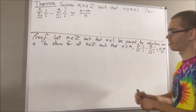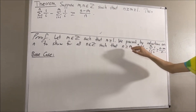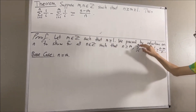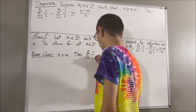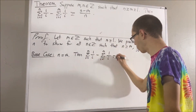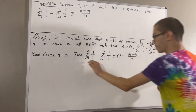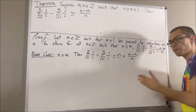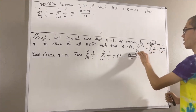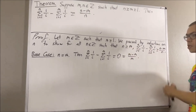Let's start with the base case. In the base case, we're trying to prove that this is true in the case where n is equal to m. Let me start by writing the left-hand side of this inequality where n is replaced with m. Well, since these two sums are equal, we know that this is just equal to 0, and 0 is equal to n minus m over n. So, we have shown that the left-hand side is equal to the right-hand side, and therefore this is greater than or equal. This completes the base case.